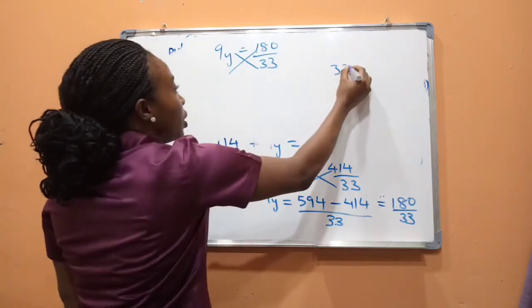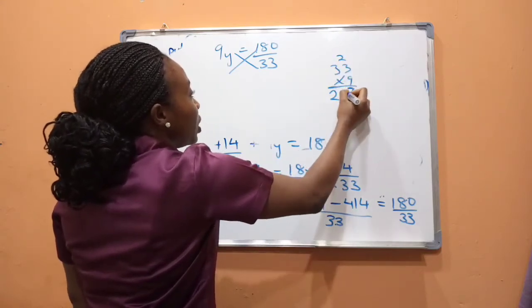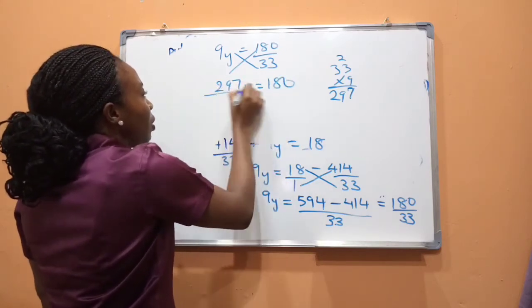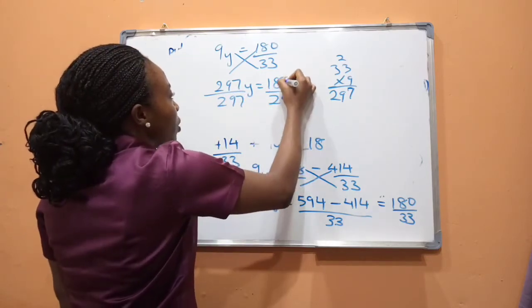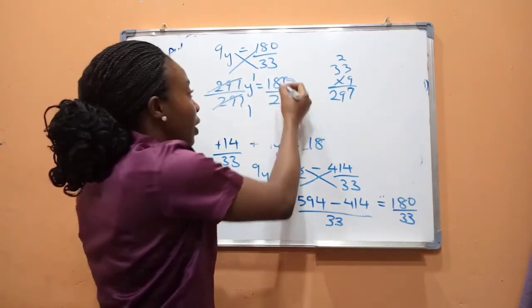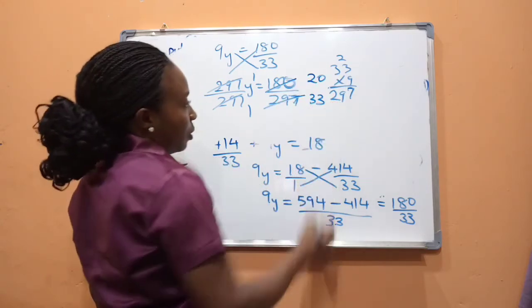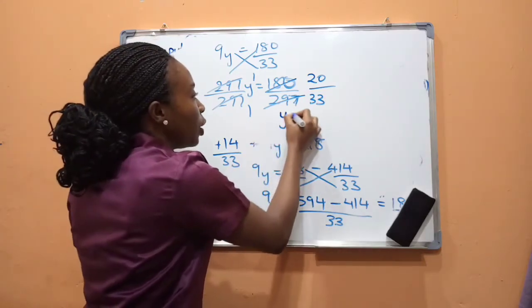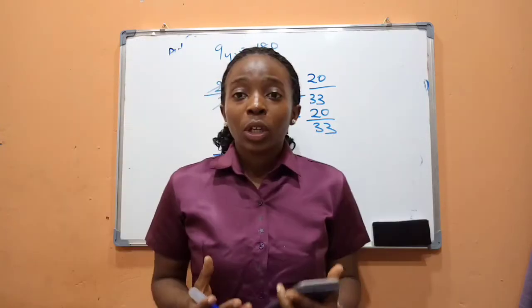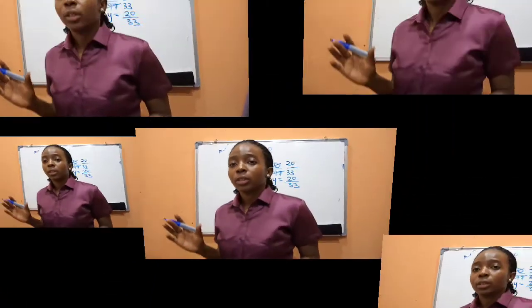Cross-multiplying: 33 × 9y = 180, giving 297y = 180. Dividing both sides by 297: y = 180/297. Simplifying by dividing by 9: y = 20/33. So the value of y is 20/33. We have found both values: x = 23/33 and y = 20/33.